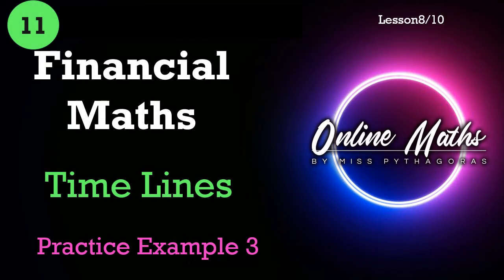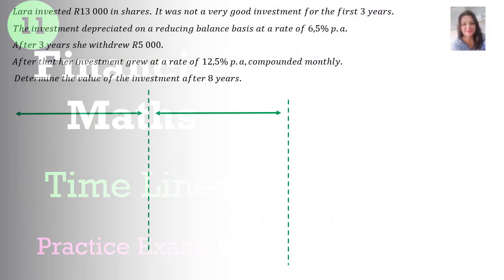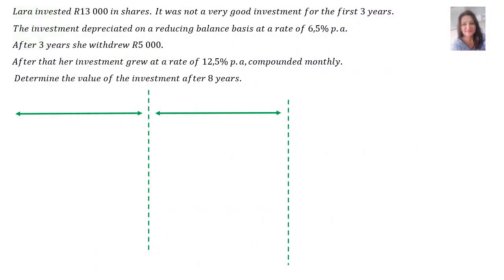Hello everybody. In this lesson I will discuss another timeline. Let's do another example. Lara invested 13,000 Rand in shares — there is your P-value, 13,000.